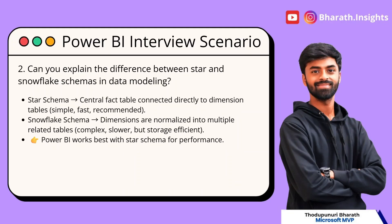The next question: can you explain the difference between star schema and snowflake schema in data modeling? This is a follow-up question because in the previous answer you used the term 'schema,' so they want to know if you understand the difference. In star schema, all dimension tables are connected to a centralized fact table in the shape of a star. The central fact table holds all transactional or fact data, surrounded by dimension tables, with a one-to-many direction.